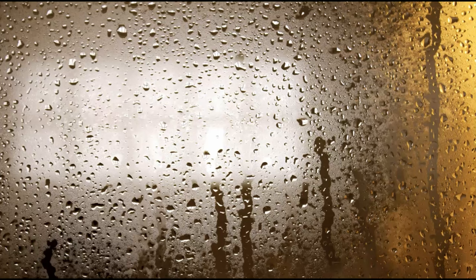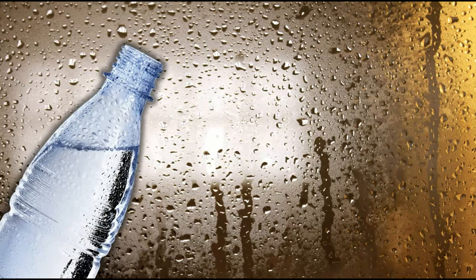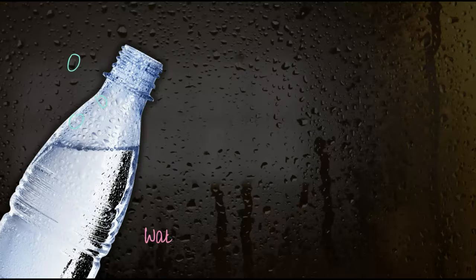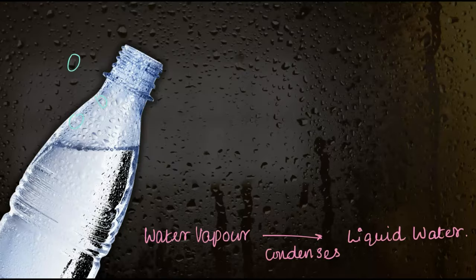Condensation on a window, like in this picture, is something you have probably seen before — whether traveling in a car on rainy days, on chilly winter mornings, or even placing a bottle of cold water on the table. You'll notice water droplets forming on the outside of the bottle or on the window. This happens because water vapor in the air condenses when it touches a colder surface, like the surface of the bottle or the window, turning back into liquid.